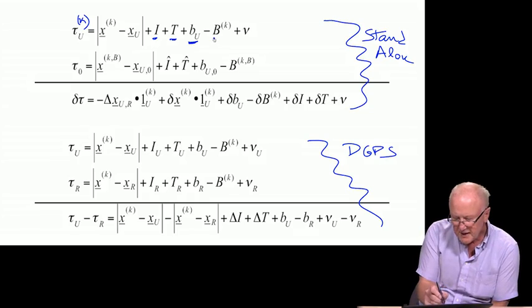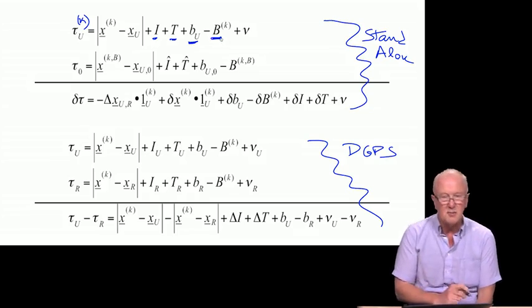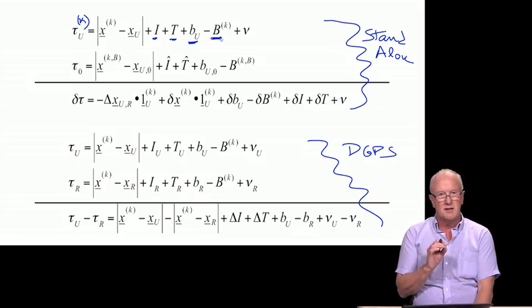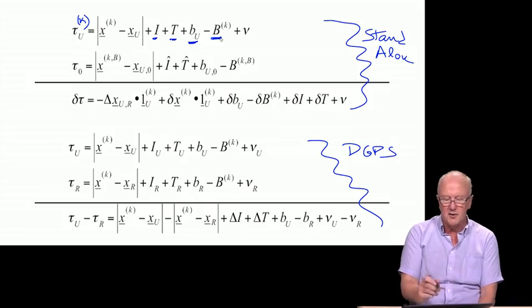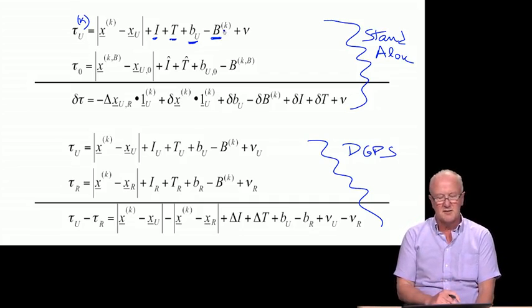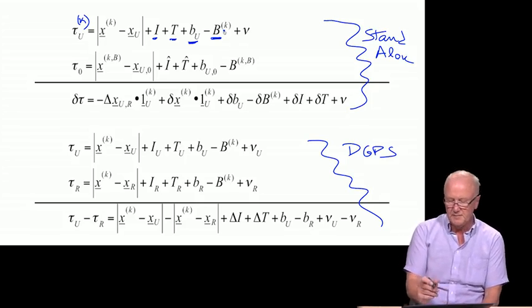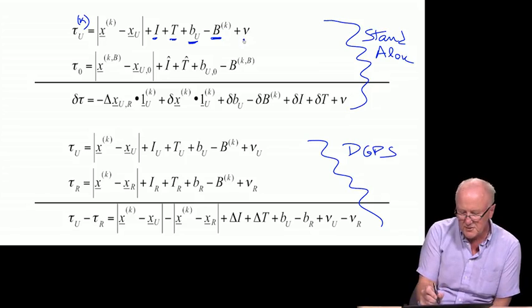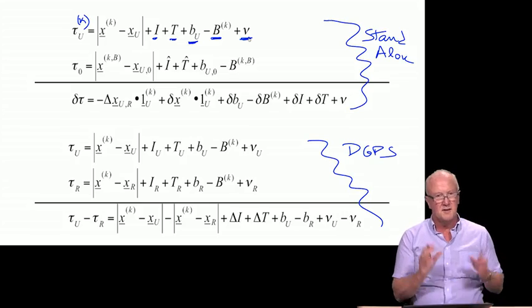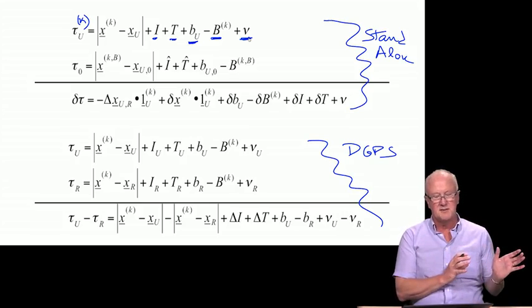If the satellite isn't perfectly synchronized to GPS time, we do have an error, we call that B, capital B. Capital B to denote satellite clock rather than user clock. And also, we have the subscript k, sorry, superscript k, to say it's associated with the kth satellite. In addition, the measured pseudorange has various other errors associated with it, and we aggregate those into the symbol nu.